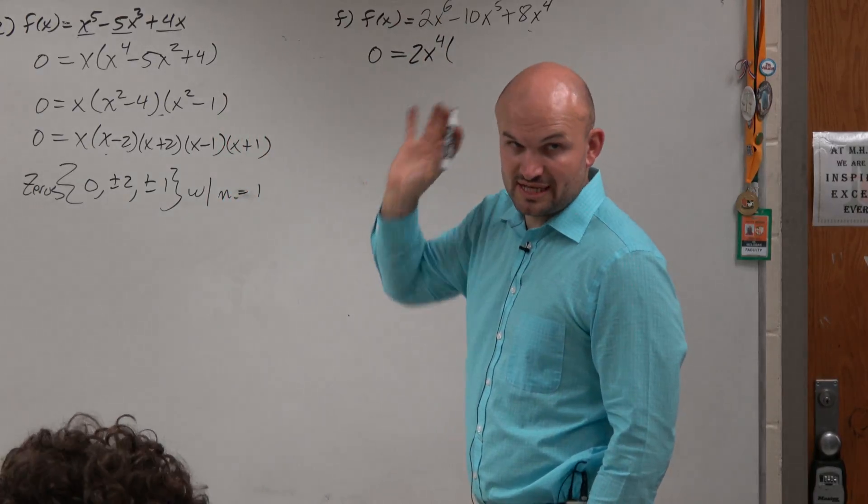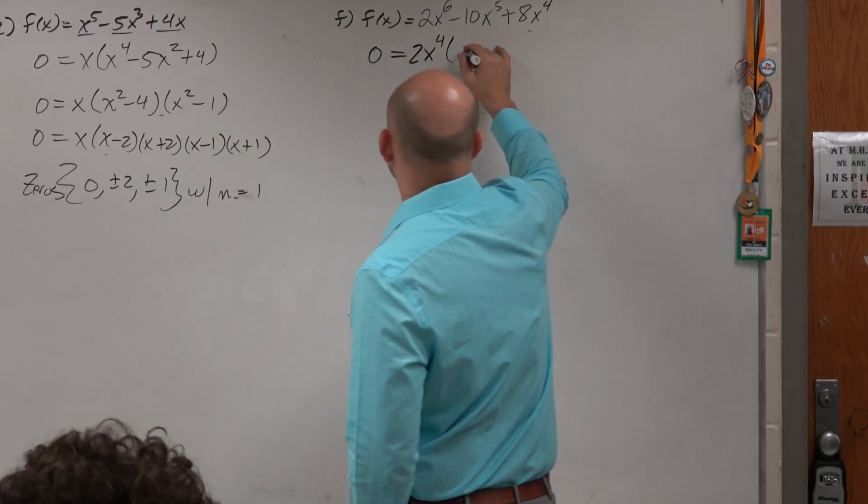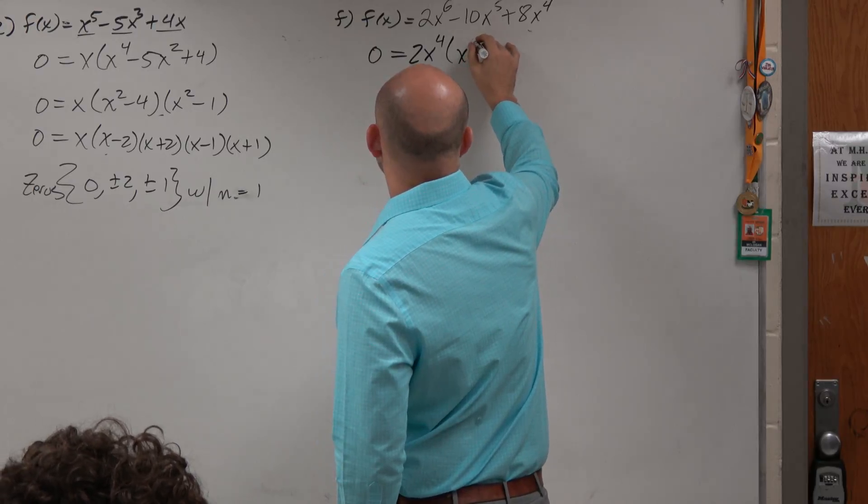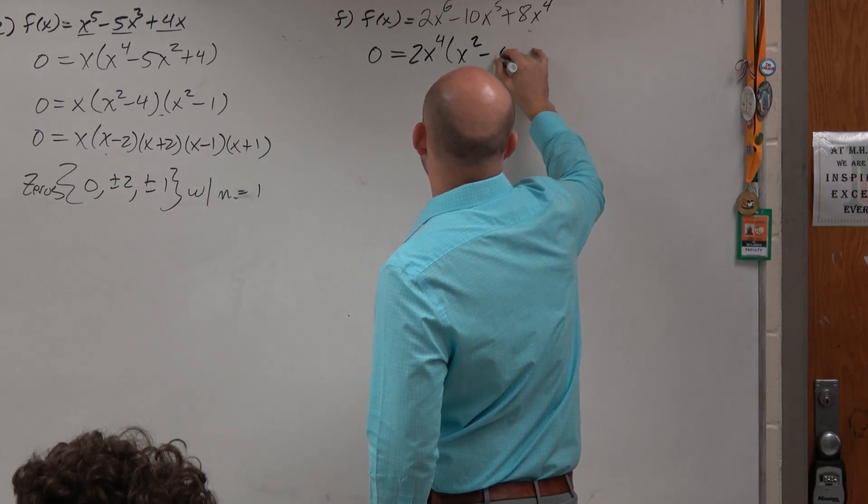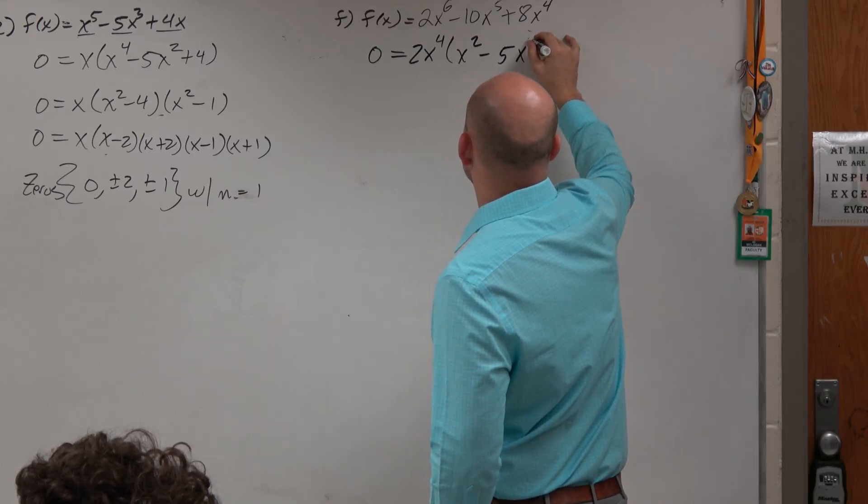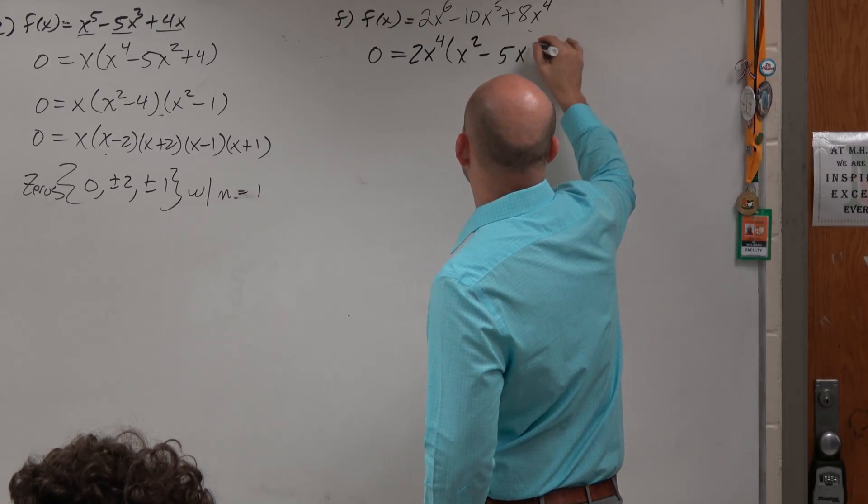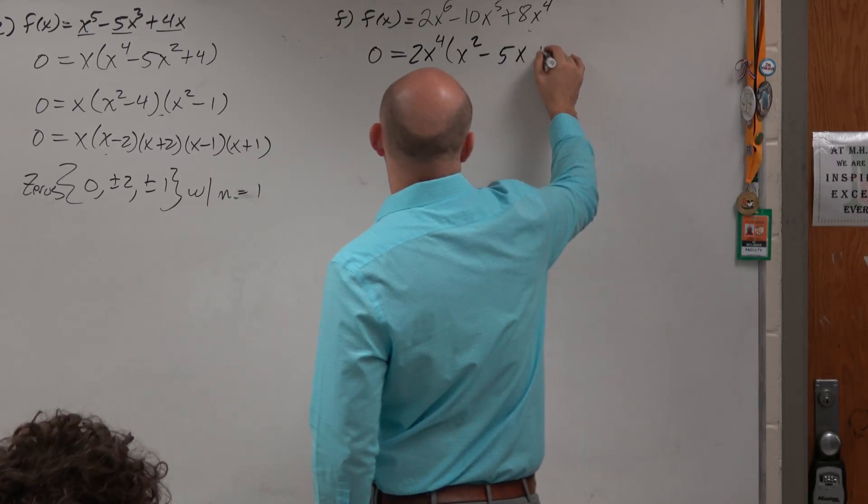And when you factor out, which is like dividing out 2x to the 4th, you're going to be left with x squared minus 5x to the 4th, 5x. And then it's going to be plus 4.